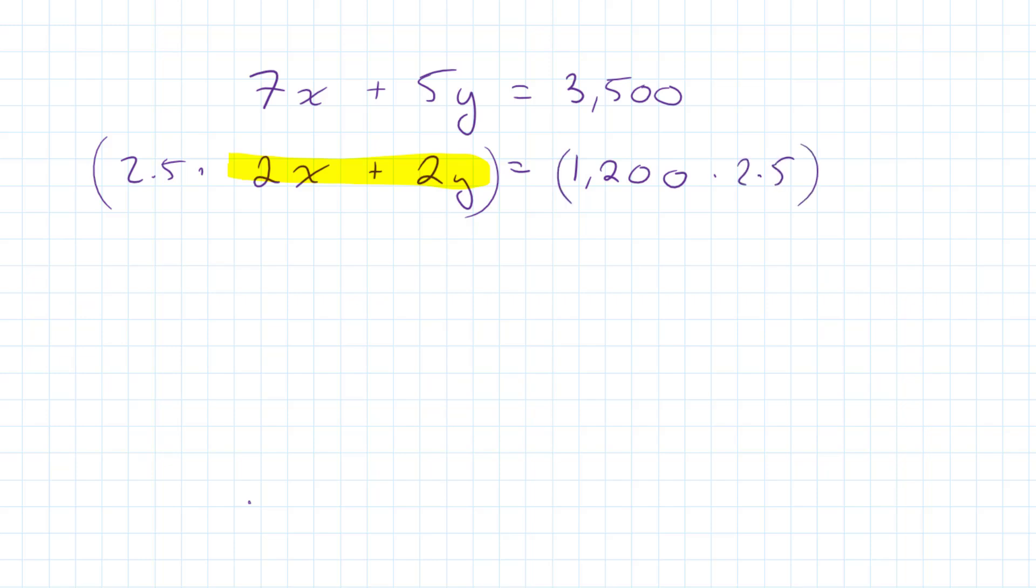And then we will have 5x plus 5y is equal to 3,000. Let's imagine that's not there now. And we can now subtract the bottom equation from the top equation.